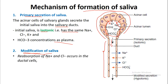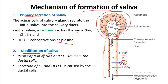In the ductal cells, reabsorption of sodium and chloride occurs, while secretion of potassium and bicarbonate takes place into the lumen of the duct. As a result, the final saliva formed is low in sodium and chloride and high in potassium and bicarbonate, making it hypotonic in nature.